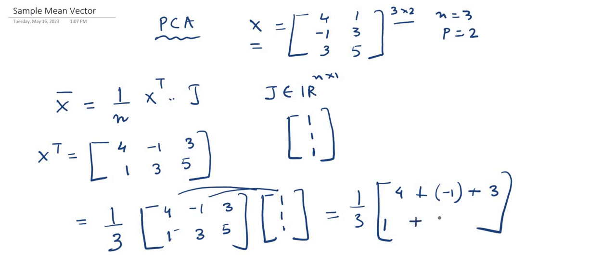1 plus 3 plus 5. So it will be 1 by 3, and it will be 4 plus 3 is 7, minus 1 is 6, and 1 plus 3 plus 5 is 9. So with matrix multiplication, we ultimately get [2, 3].